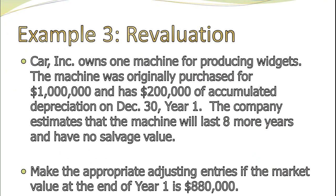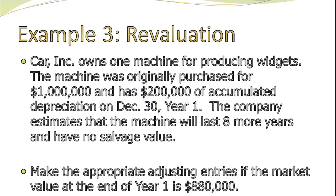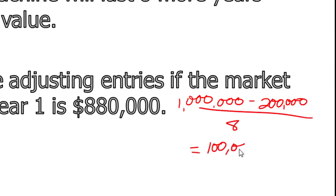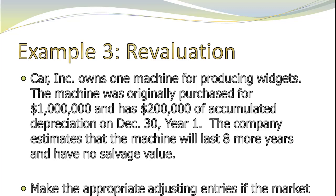This is Carr Incorporated. They own a machine for producing widgets. The machine was originally purchased for $1,000,000, and as of December 31st of year one, it has $200,000 of accumulated depreciation already recognized. We want to record the depreciation and any other adjusting entries necessary if the market value is now $880,000. The machine has eight years of useful life remaining including this year, and no salvage value. Under the historical cost method, we'd take $1,000,000 minus $200,000 divided by eight, giving $100,000 of depreciation expense.